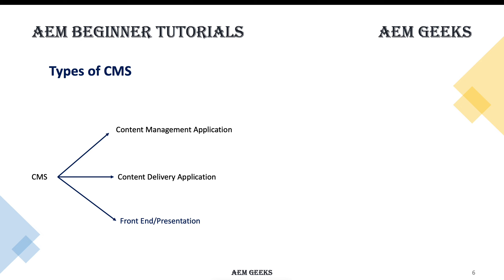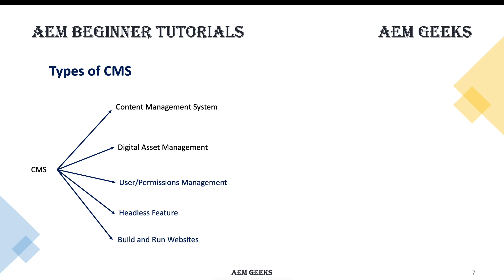At a high level, a CMS has three parts: the content management application, the content delivery application, and the front-end rendering functionality. I'll explain this in detail with examples when I give a walkthrough of AEM. Overall, a CMS provides features like content management, digital asset management, access control over content, headless CMS capability, and the ability to build and run a website within the CMS itself.